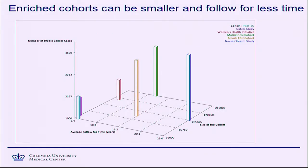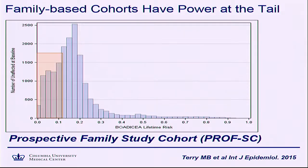One thing you can accomplish by thinking about an enriched sample is simply the fewer number of people you have to follow over time to have the same precision and the same number of people with an outcome. These kinds of family-based studies can be much more statistically efficient than average risk cohorts. In particular, for thinking about gene-environment interaction, this is our family-based cohort that we've been studying and following now for close to 20 years.